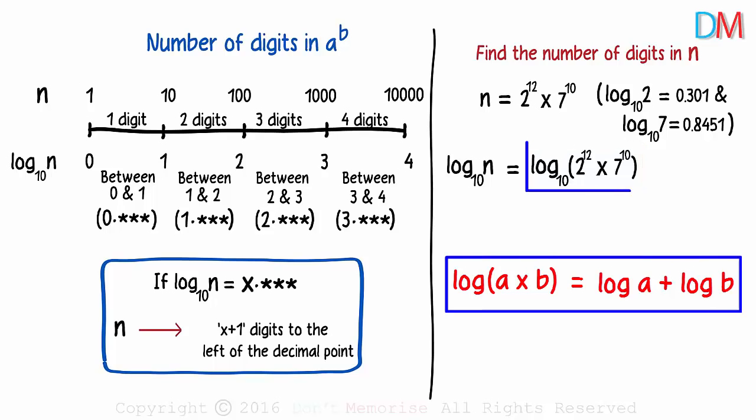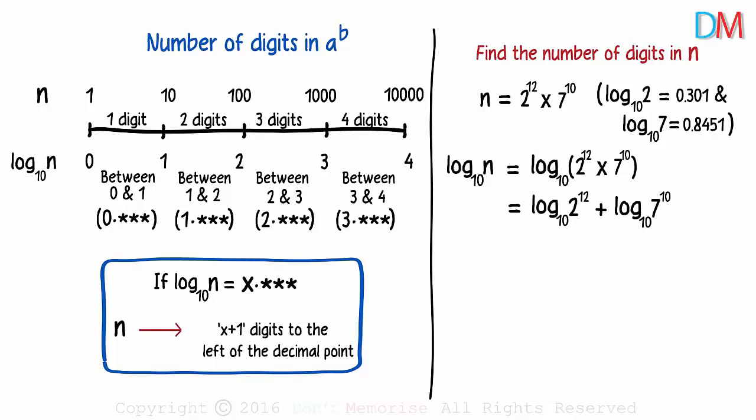Applying the identity, the right hand side can be written like this. Can we simplify this further? Yes, we can use the multiplication by a constant identity. Log of a to the power n is equal to n times log a.